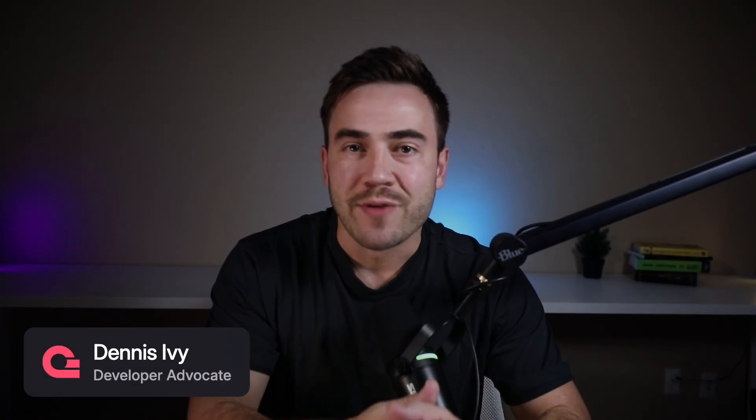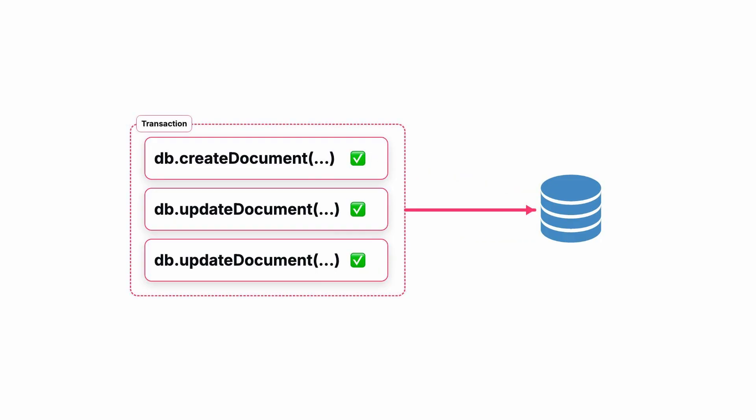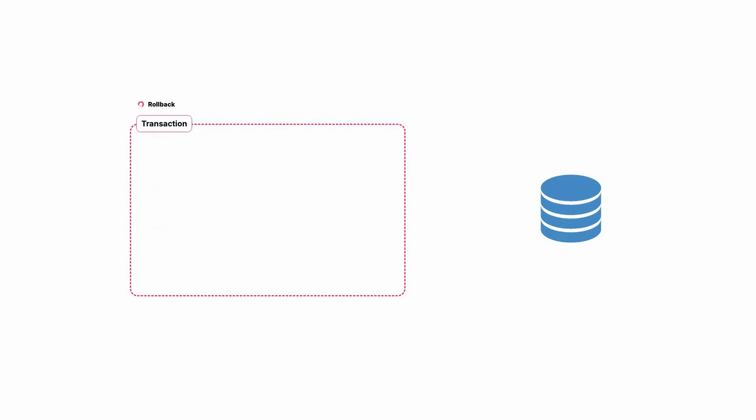Database transactions are a way of keeping our database in sync by combining multiple database operations into one single action to ensure consistency in our data. All database transactions are essentially a collection of queries or database operations that can be initiated as one single action, ensuring that all operations within that transaction are submitted successfully. If something goes wrong within a single operation within a transaction, everything is automatically rolled back and nothing happens. It's either everything or nothing, which keeps our data consistent without any partial updates.